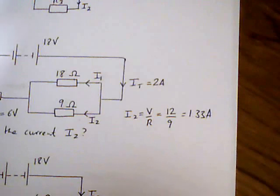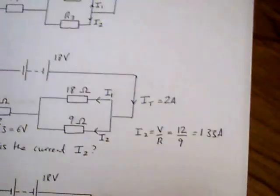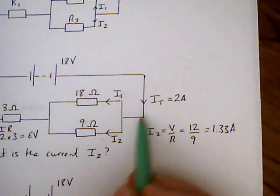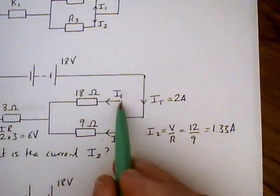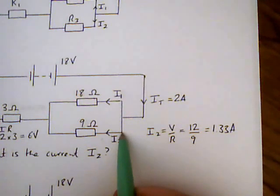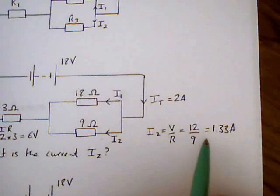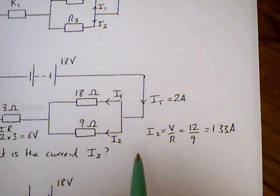If we wanted to find I1 we can simply use Kirchhoff's first law because the total current splits up into I1 and I2. So to get I1 it would be 2 minus 1.33 and so we get 0.67 for I1.